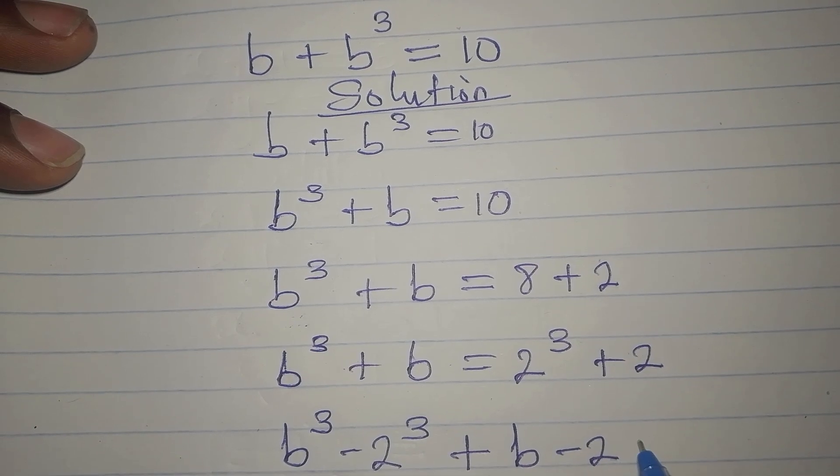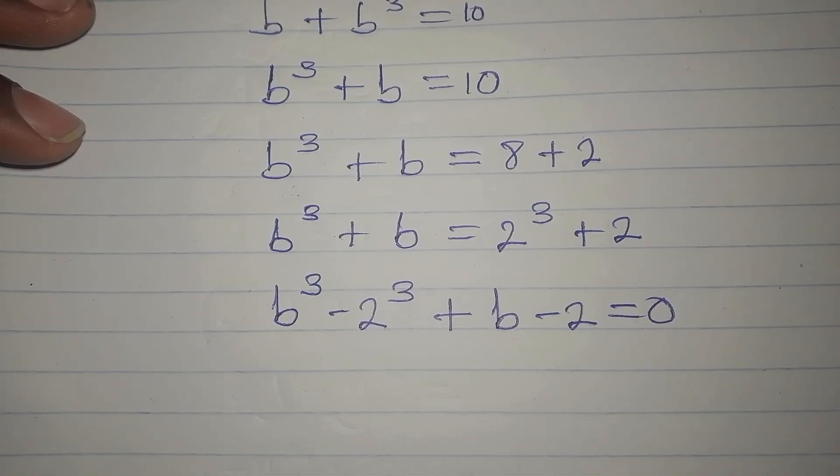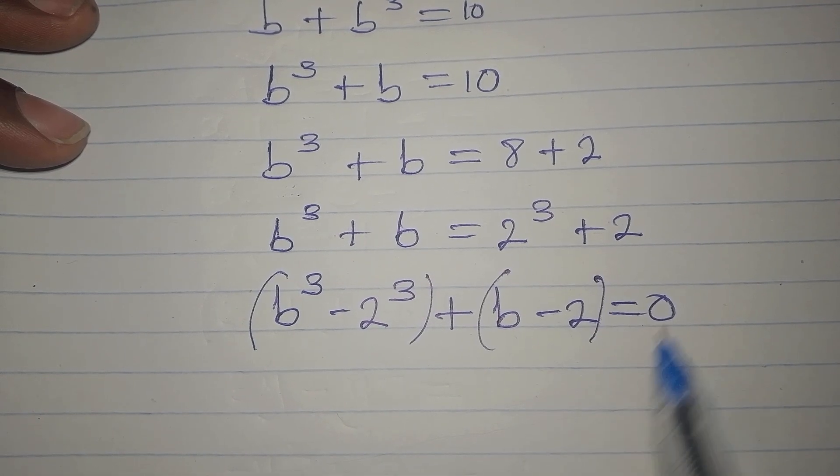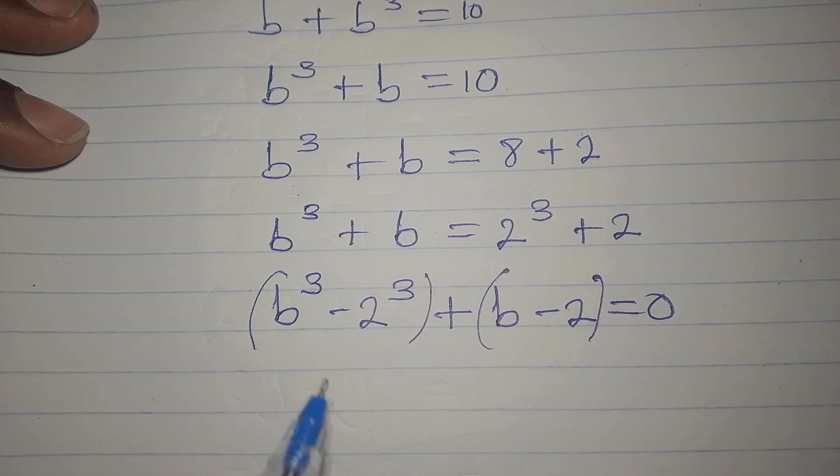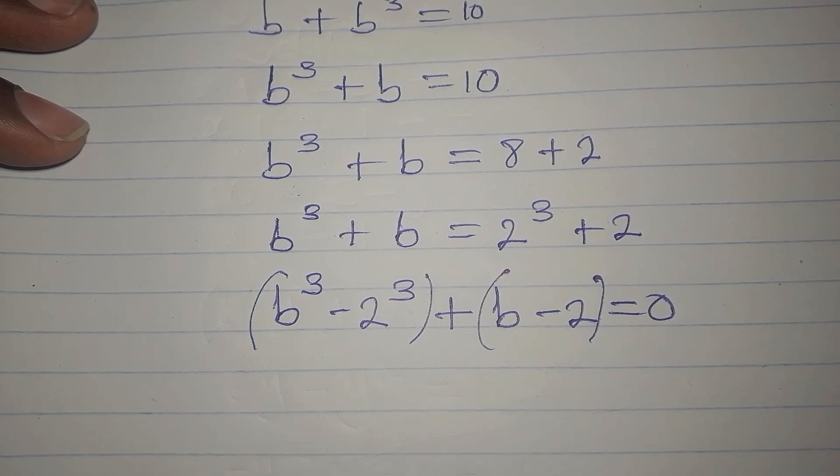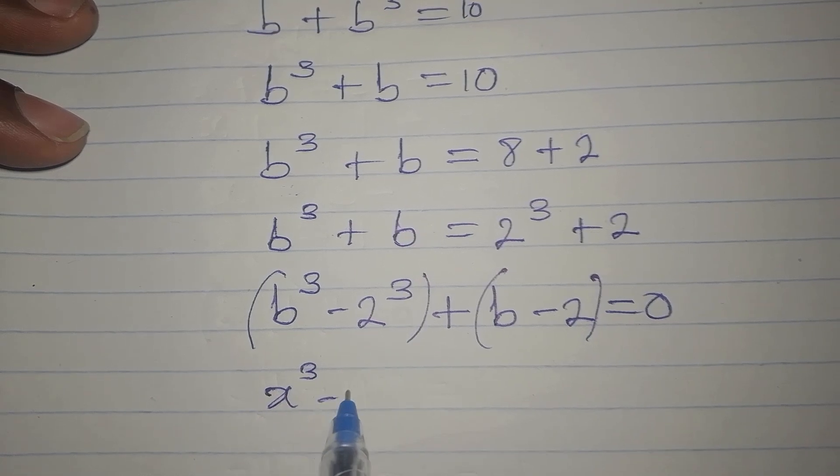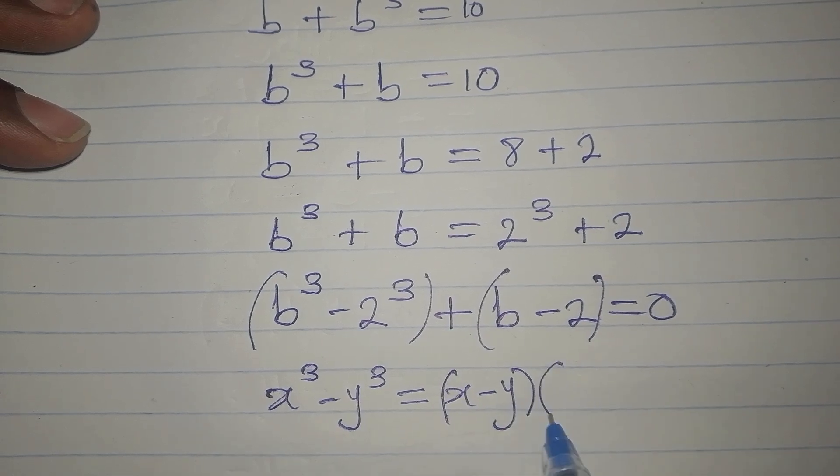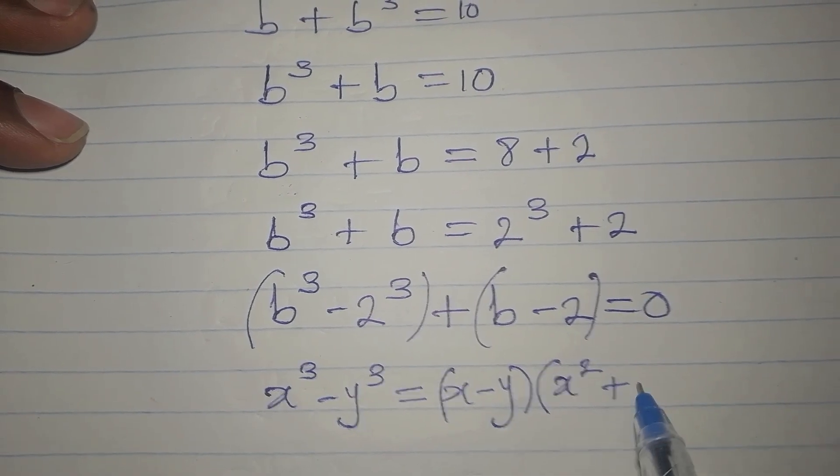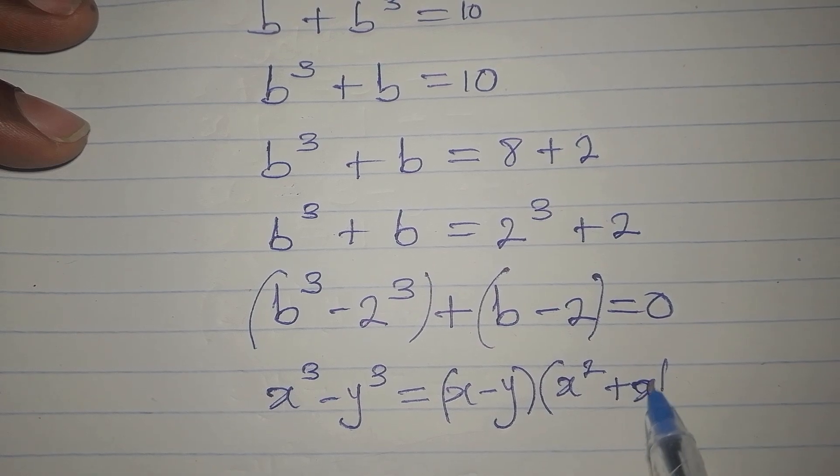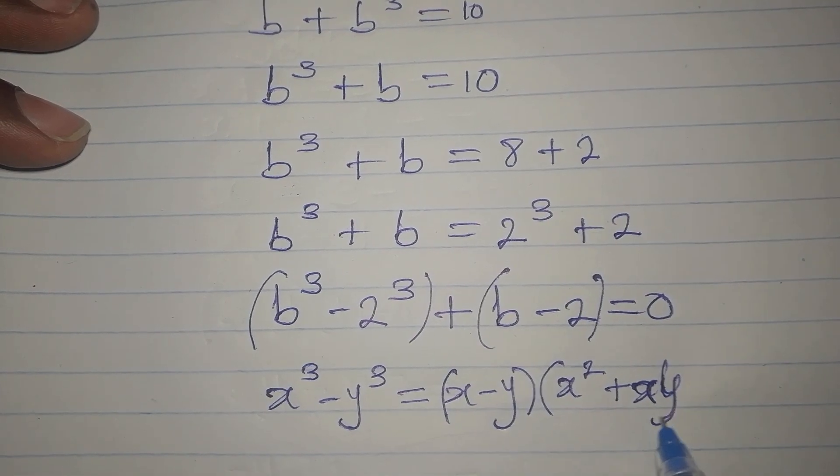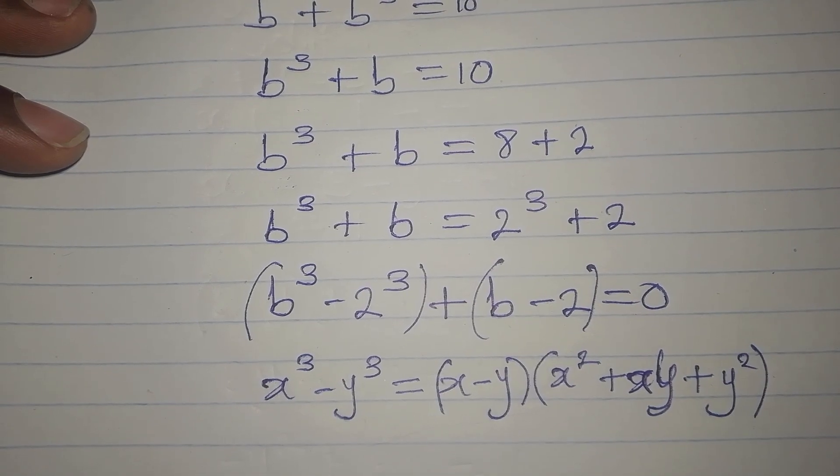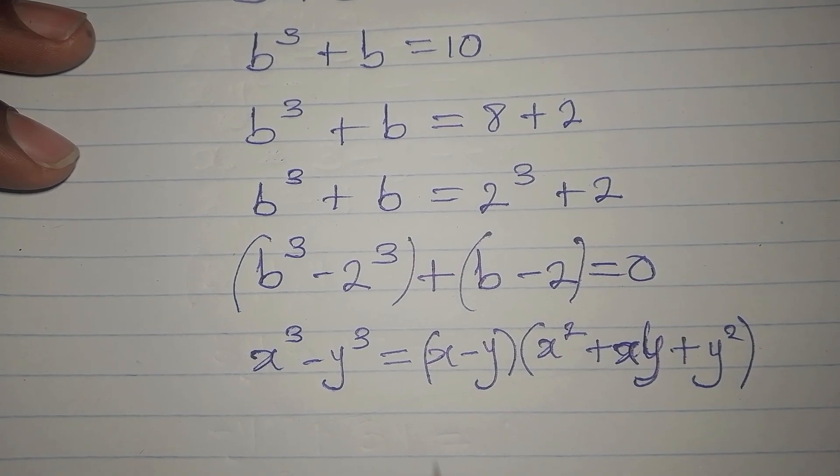Now this can be dealt with separately. We have the difference of two cubes. Remember that if you have x³ - y³, this is the same as (x - y)(x² + xy + y²). That's what we have here, so b stands for x and 2 stands for y.